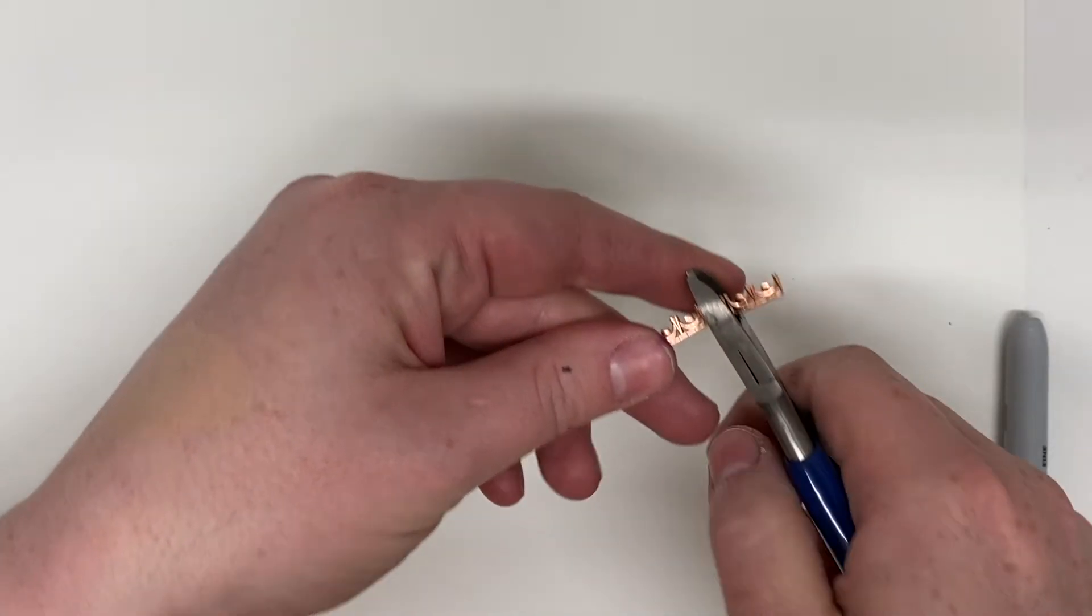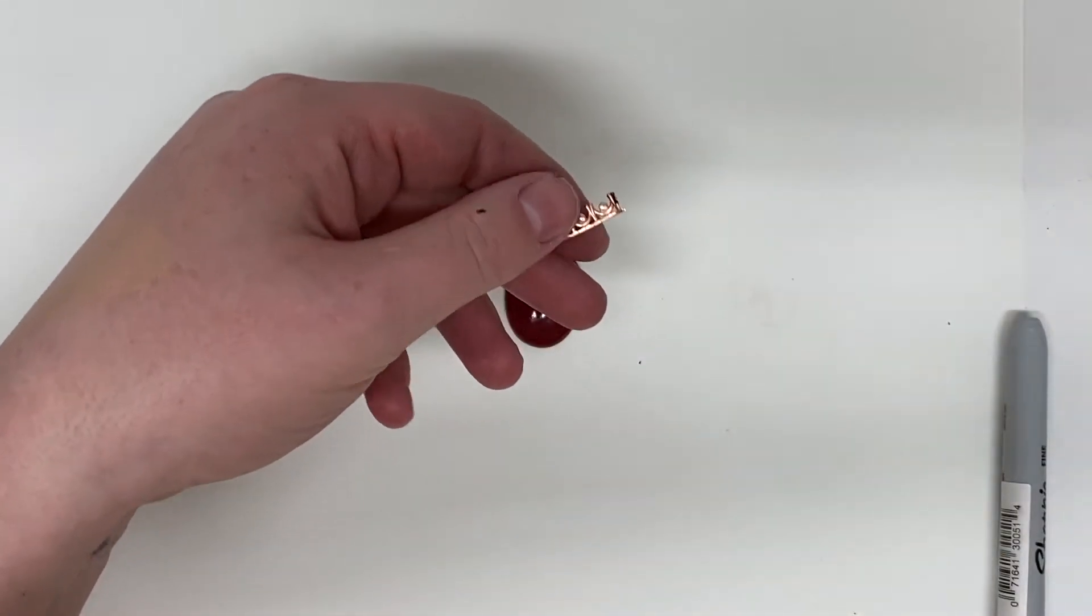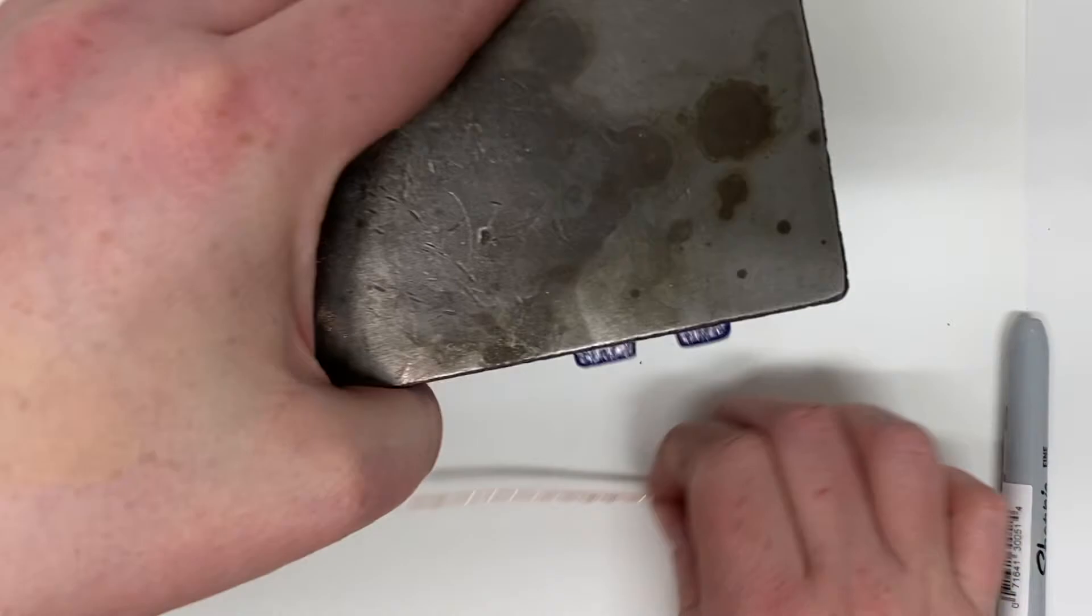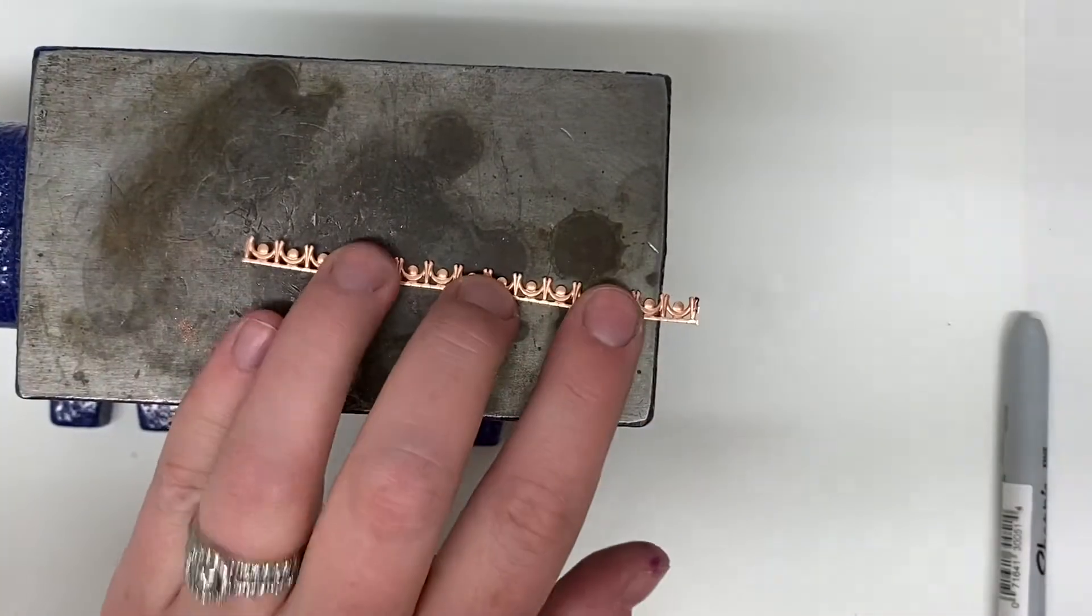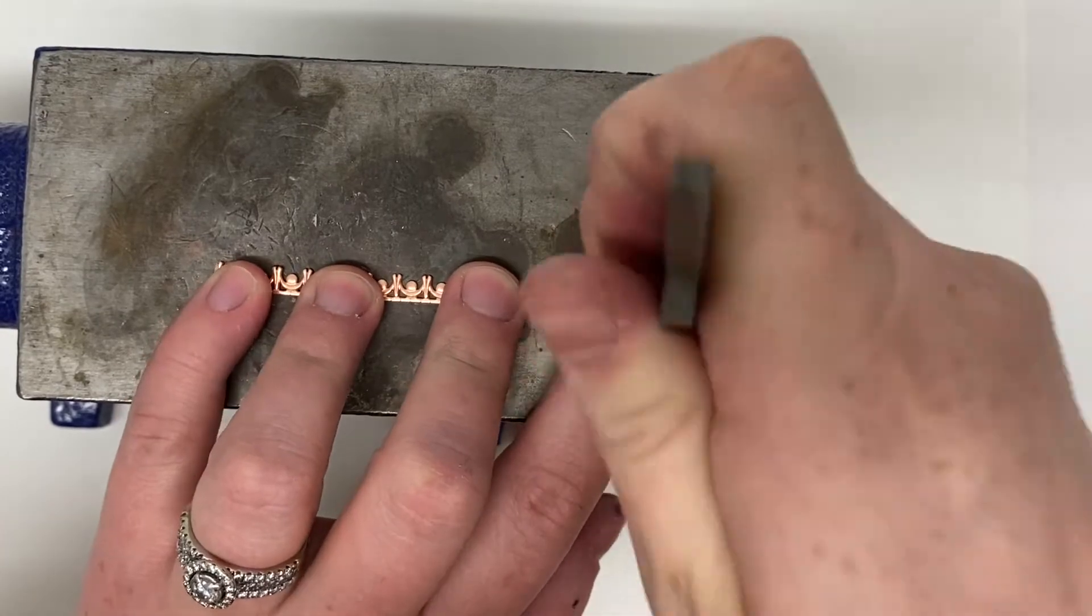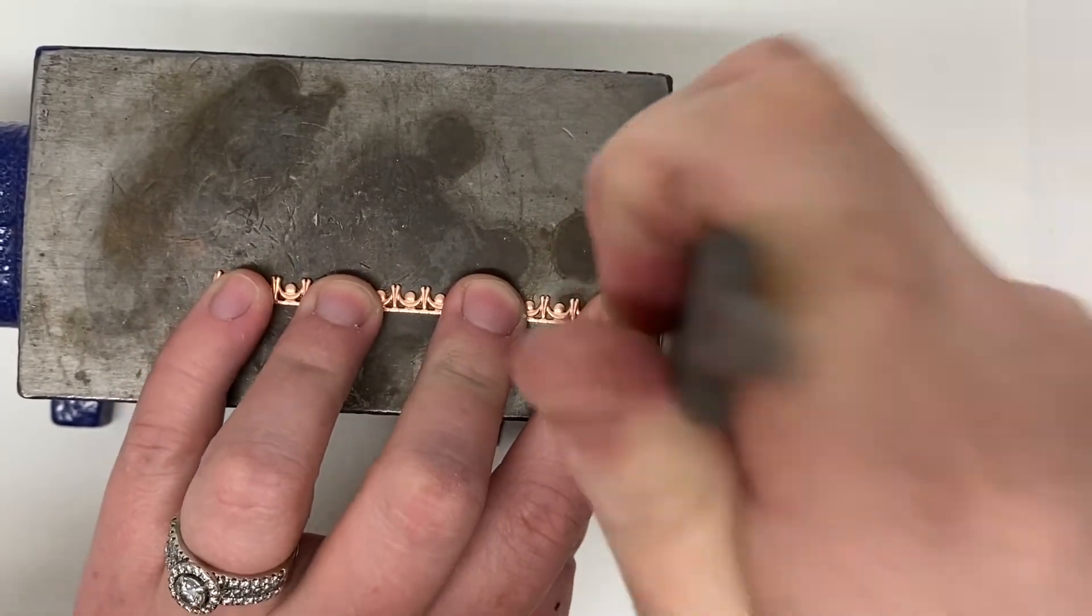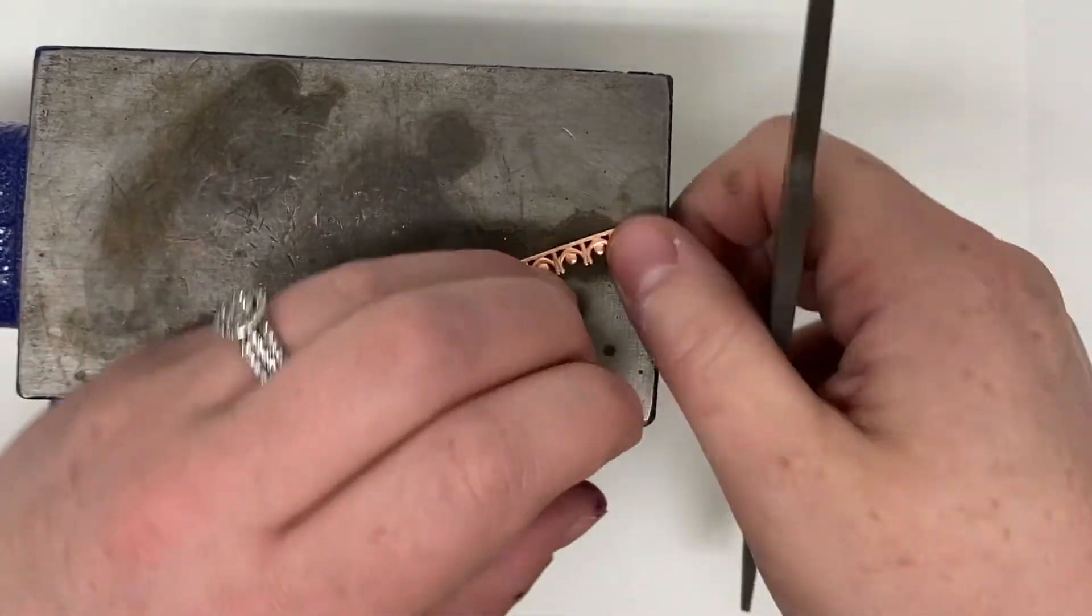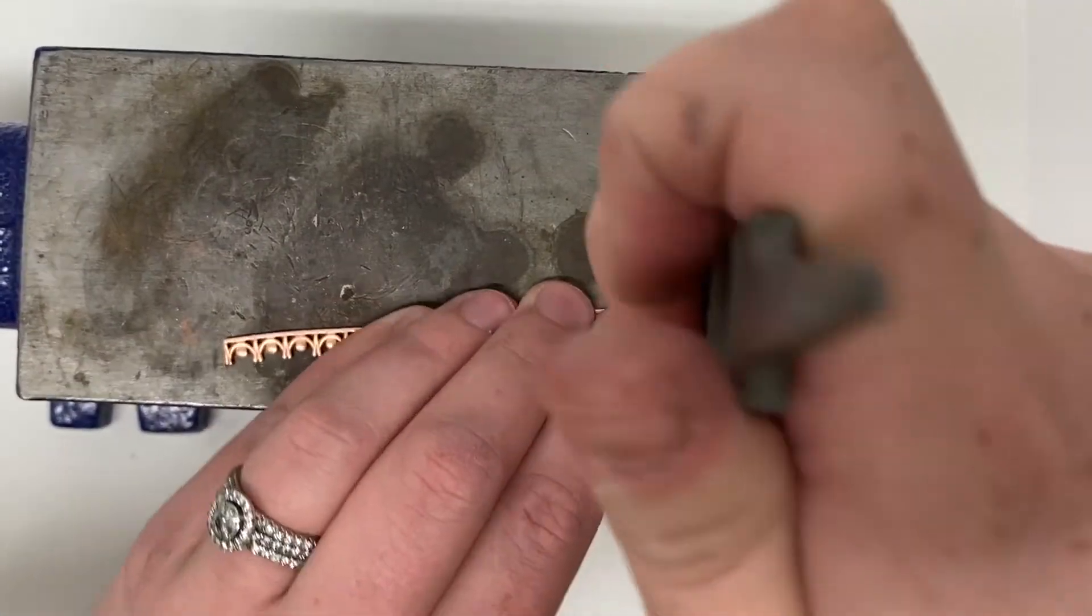Similar to the ring shank, these need to have a tight fit. So after I have the correct length, I'm going to again file the edge flat so that when I solder it, it has a nice place to have a tight seam. Filing this nice and straight and same on the other side.